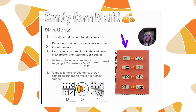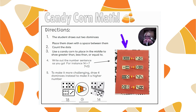Now for the equal sign - if you get two numbers that are the same, we can't use a Candy Corn for that. You can use your pretzel sticks, maybe break them and lay them down, or write it on a piece of paper, or get creative and find something in the kitchen to use for that.